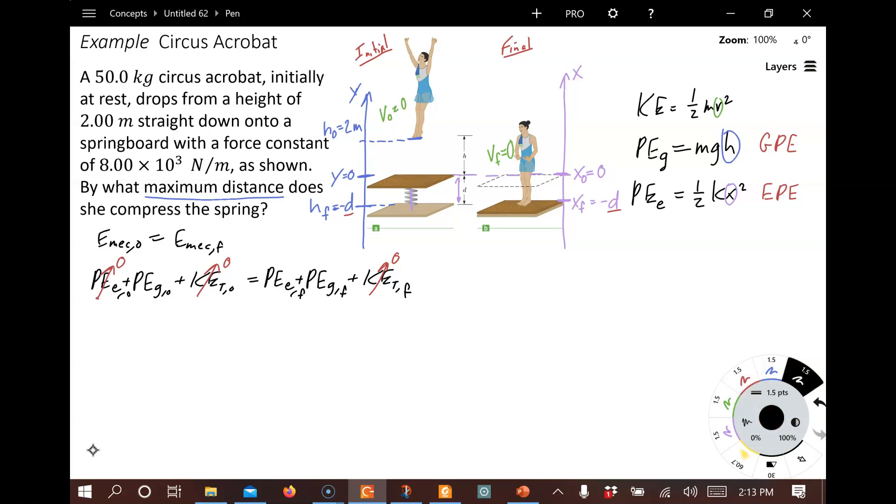Let's plug in our equations now. So PEG initial, that means MGH initial. That's going to be equal to PE elastic final, 1/2 K X final squared, plus PEG final, MGH final. And let's plug in our numbers here. So we've got MGH initial is 2 meters. We've got K, we know what K is. I'll plug those numbers in next. X final, that's going to be minus D squared, plus MGH, and H final is minus D as well.